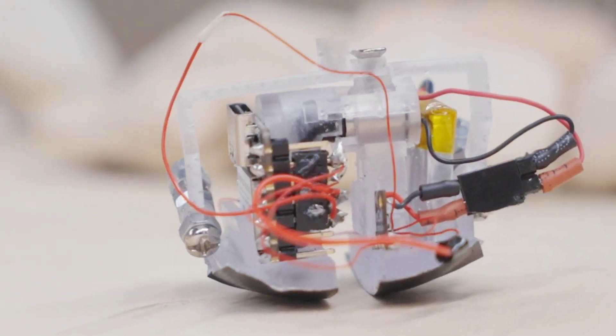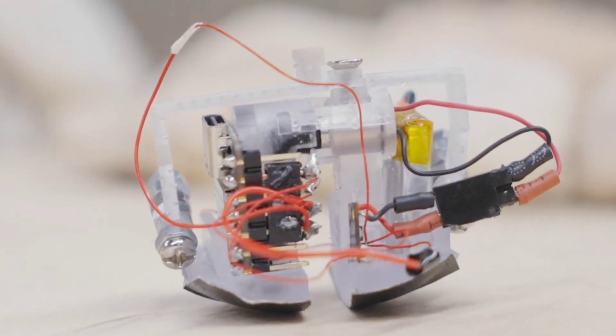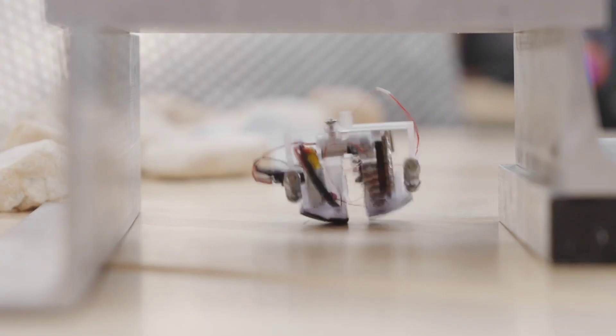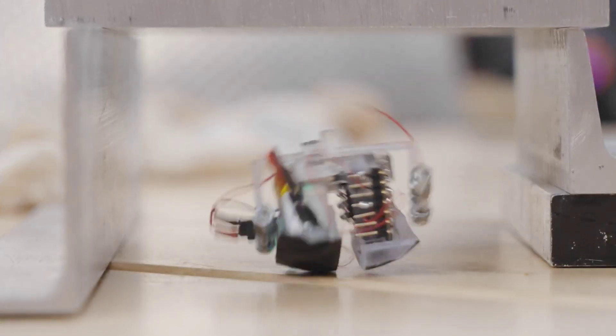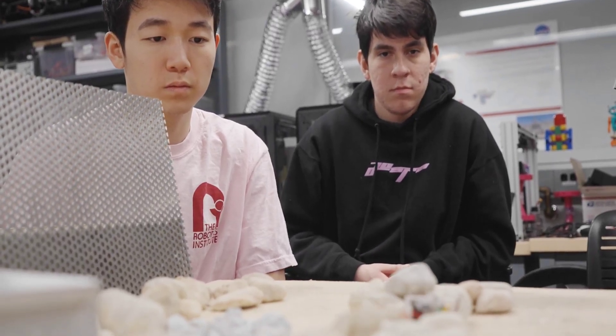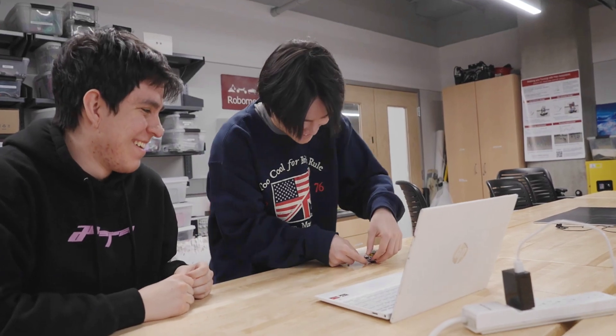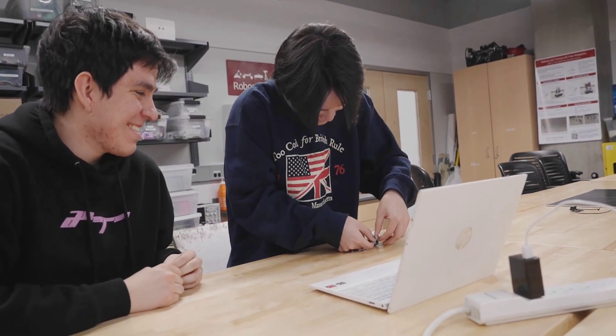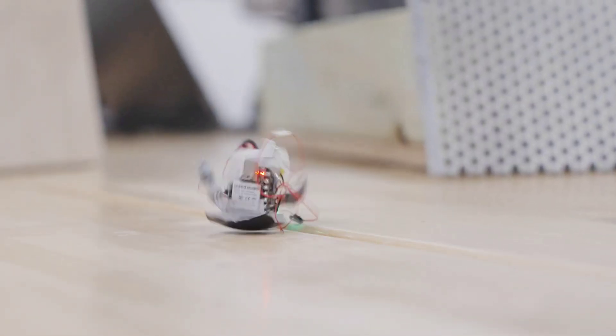This setup allows Zippy to scuttle along at speeds of up to 9.8 inches per second, or about 10 leg lengths per second. If an average-size adult human were running at that same leg-length rate, they would be going approximately 30 kilometers per hour. This makes Zippy the world's fastest powered autonomous bipedal robot for its size.